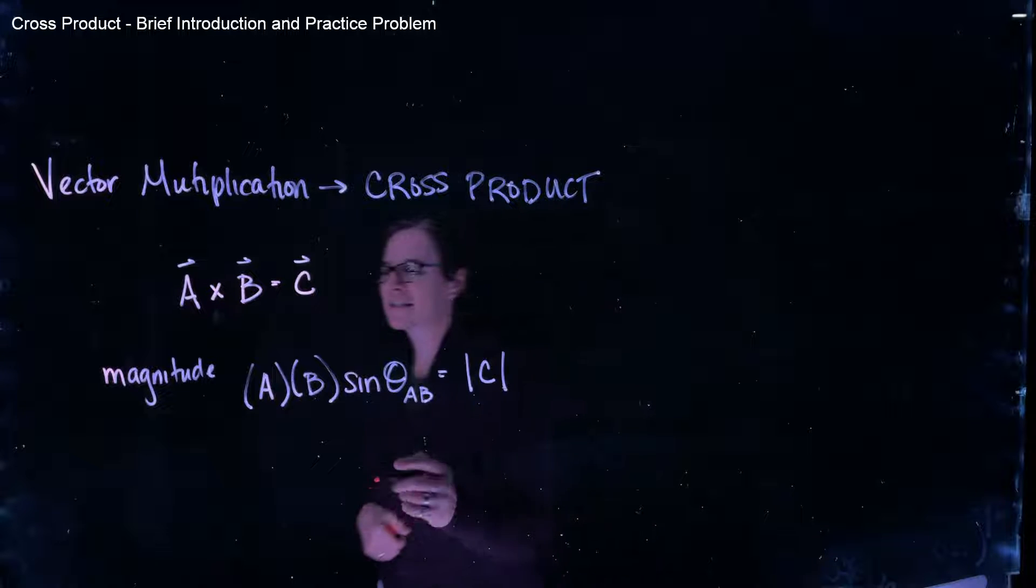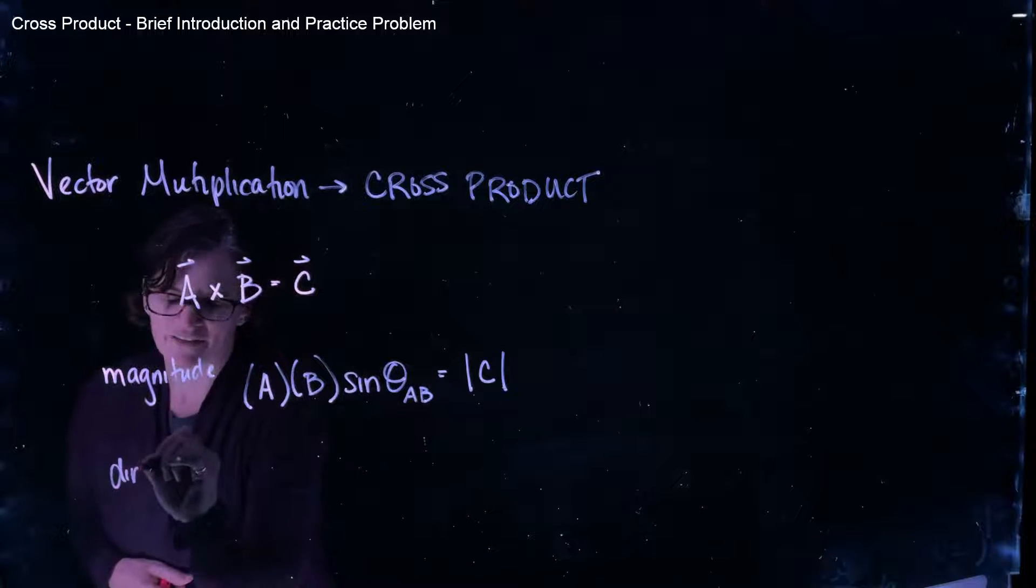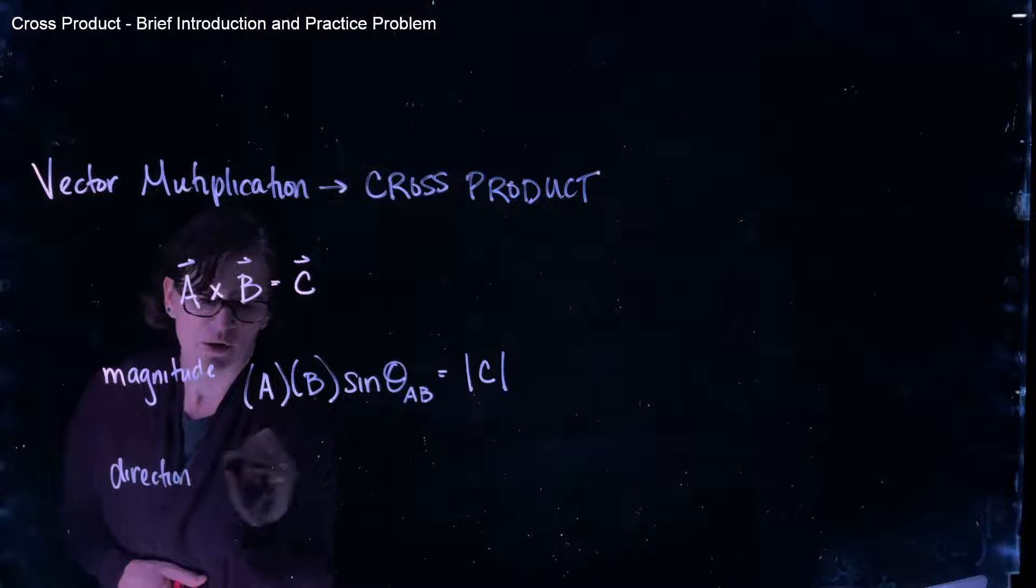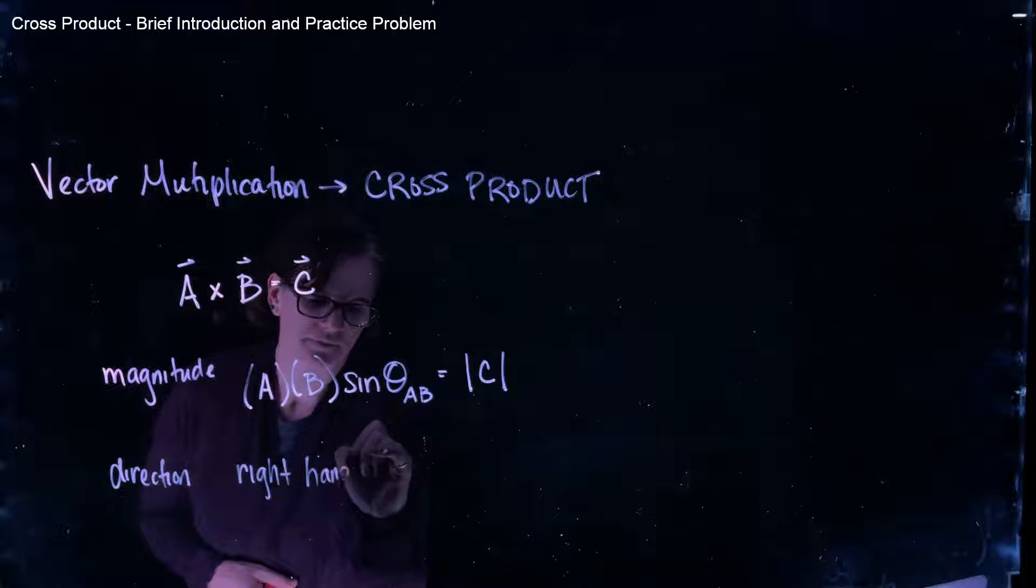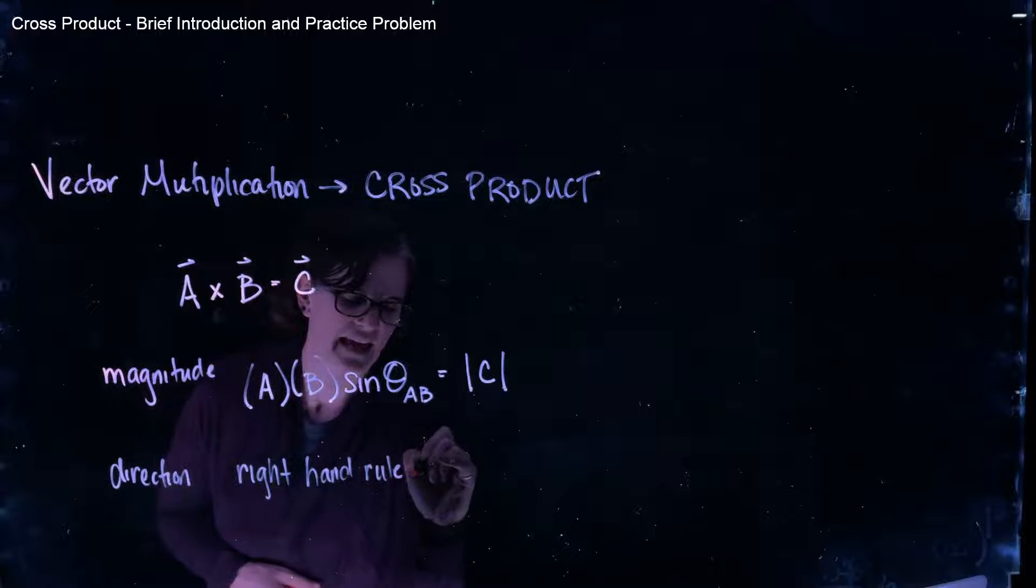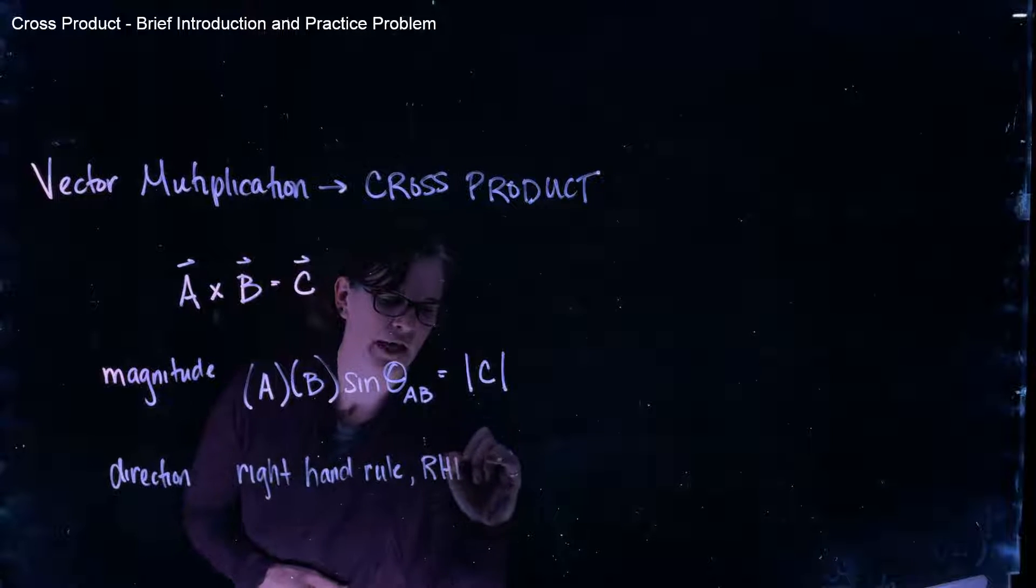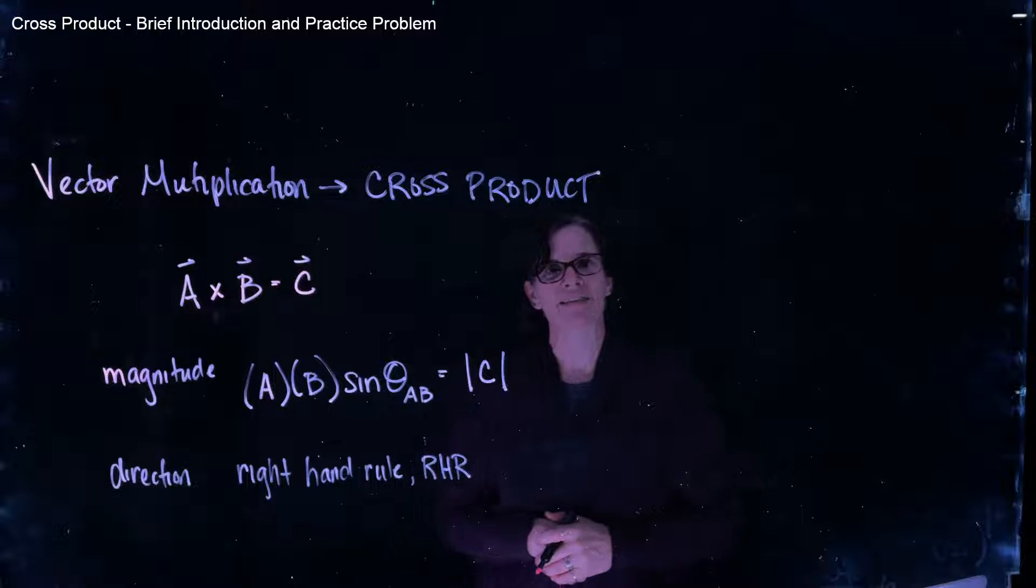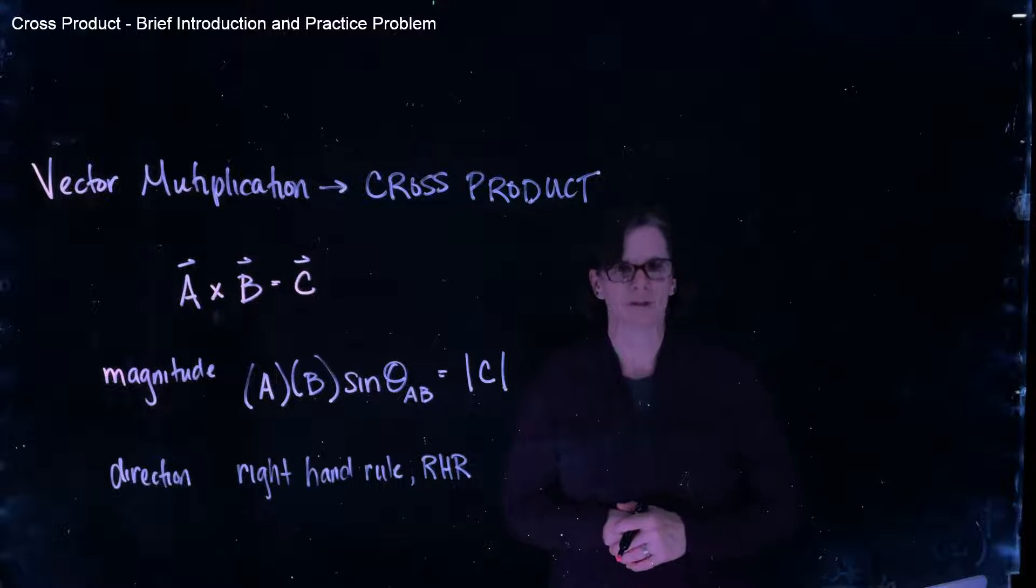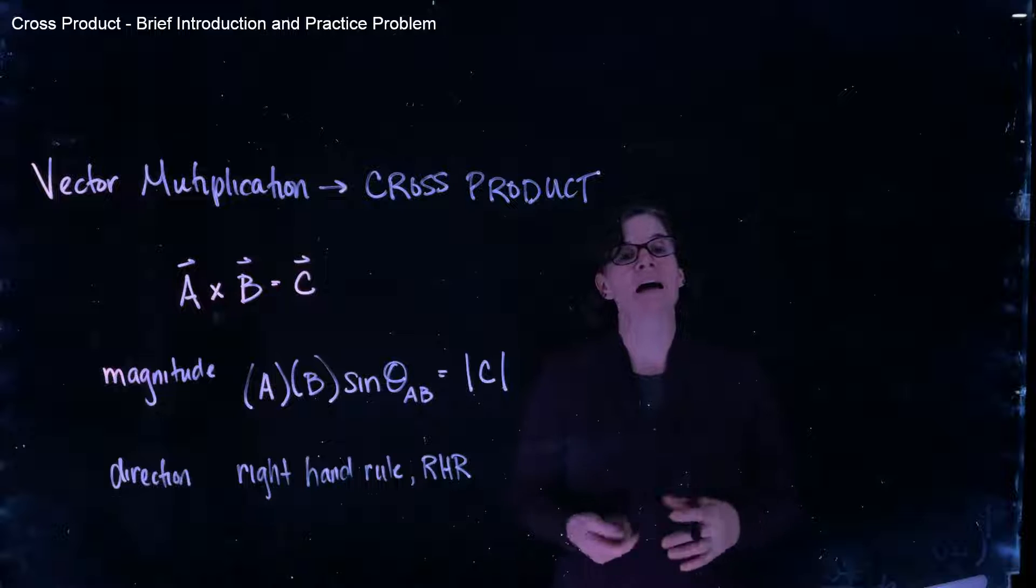Now, in order to get the direction of vector C, we're going to use what's called the right-hand rule. Sometimes you'll see that abbreviated RHR. Now, the right-hand rule, there are three methods that we can use. So let's use an example of how we use the right-hand rule.